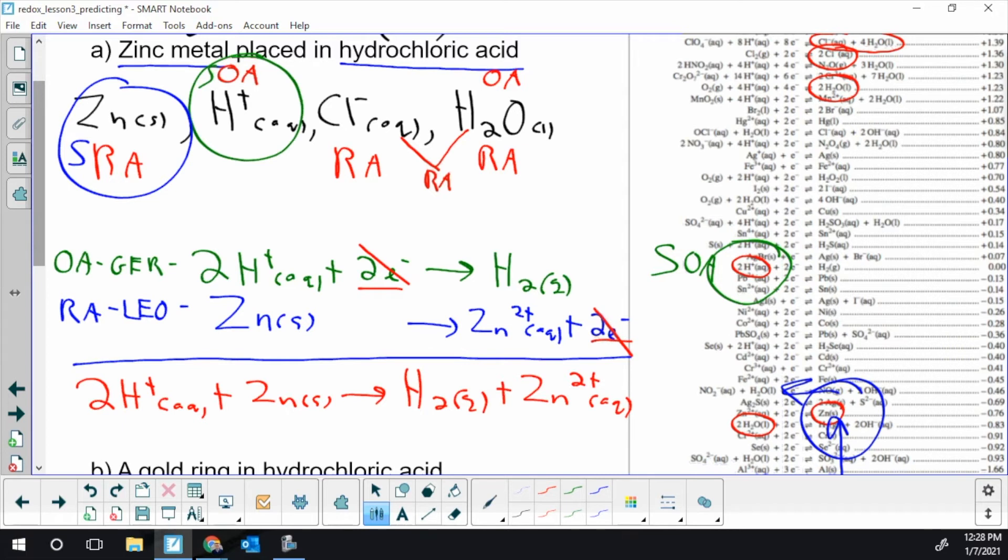Last, does this reaction occur? You have to think of the position of the RA and the OA. It is spontaneous. The strongest RA is below the strongest OA. So the oxidizing agent is relatively strong. The reducing agent is relatively strong. One can have the electrons ripped away from the other.